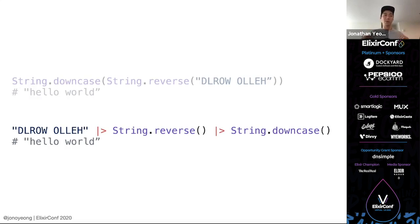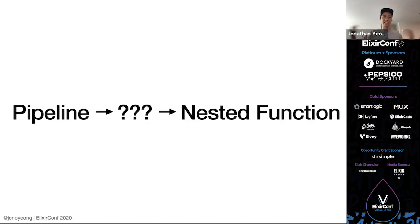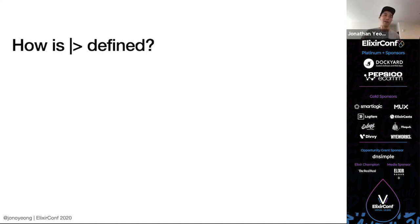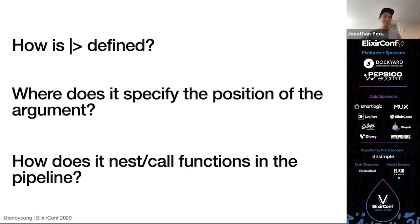But how does this actually work? Right now in my head it's: pipeline, something, nested function — okay cool. This talk has three questions I want to answer. First, how is the pipeline operator actually defined? Second, where does it specify the position of the argument? The documentation always says the first position — where is that in the code? Is it hard coded? And why does it have to be the first position — can it be any other position? And third, the crux: how does it nest and call the functions in the pipeline?